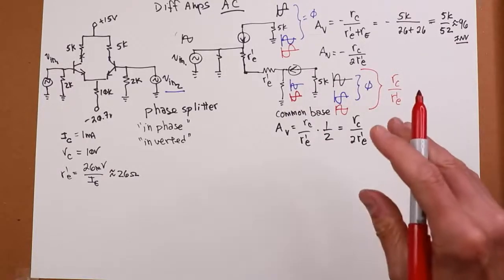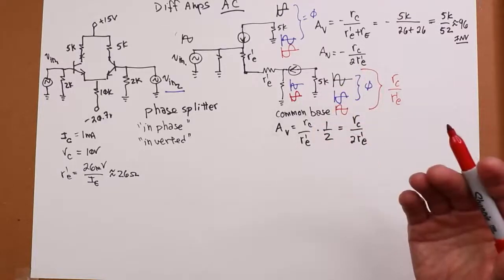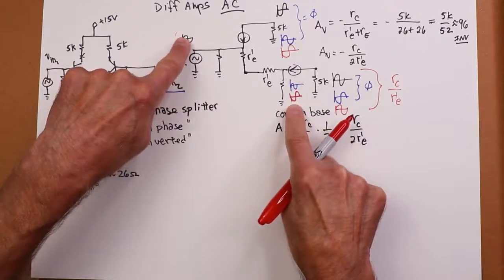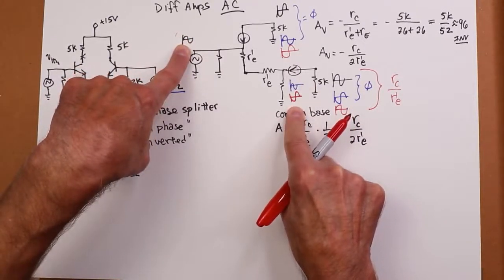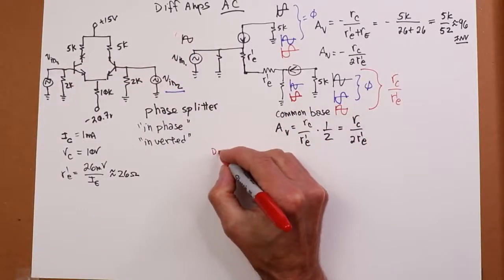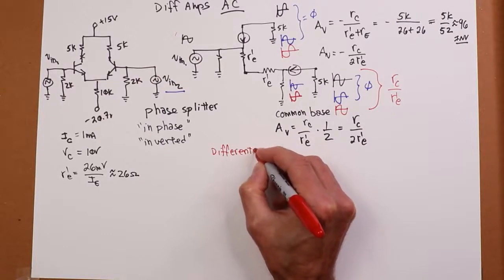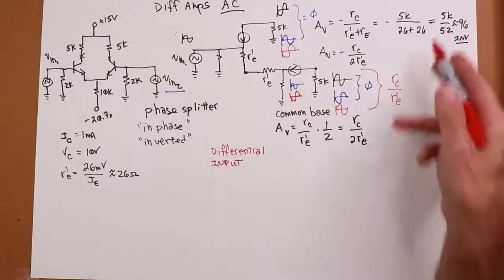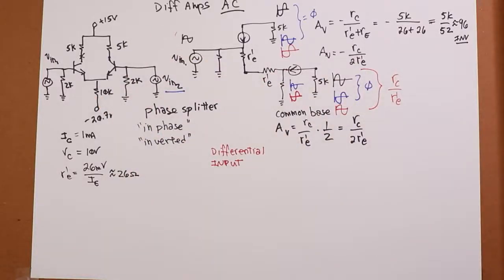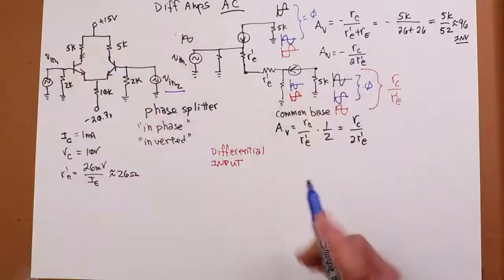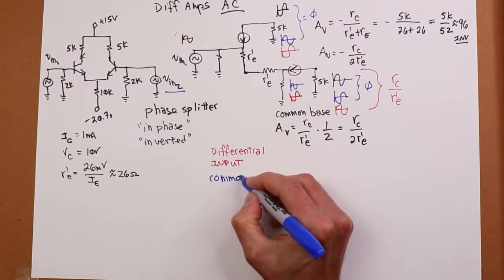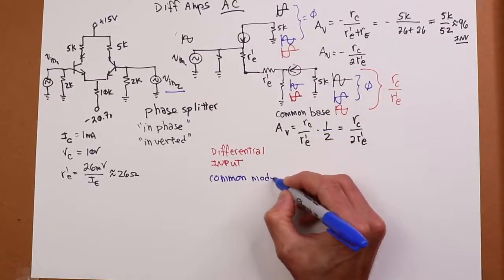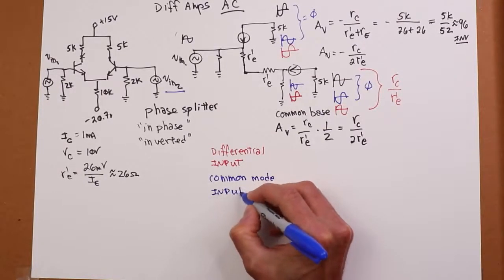These two versions are very important. When we have an inverted phase on the second input, that's referred to as a differential input, and we see a big output signal with appropriate gain. On the other hand, if the two inputs are identical, that's called a common mode input — the same signal is common to both inputs — and the output signal essentially cancels.